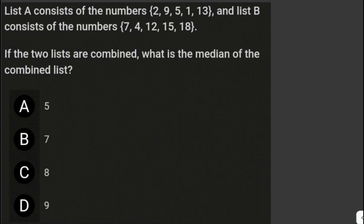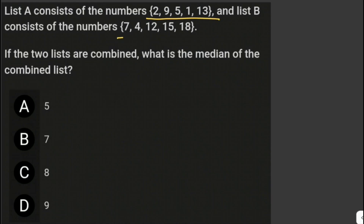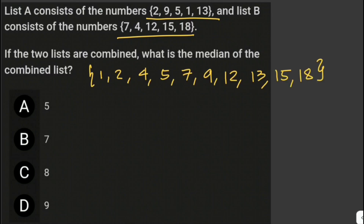Let's recall that the median of a set of data is the value located in the middle of the data set. So we just have to arrange the two sets in ascending order. We've already combined the two data sets, so in ascending order we have: 1, 2, 4, 5, 7, 9, 12, 13, 15, 18.